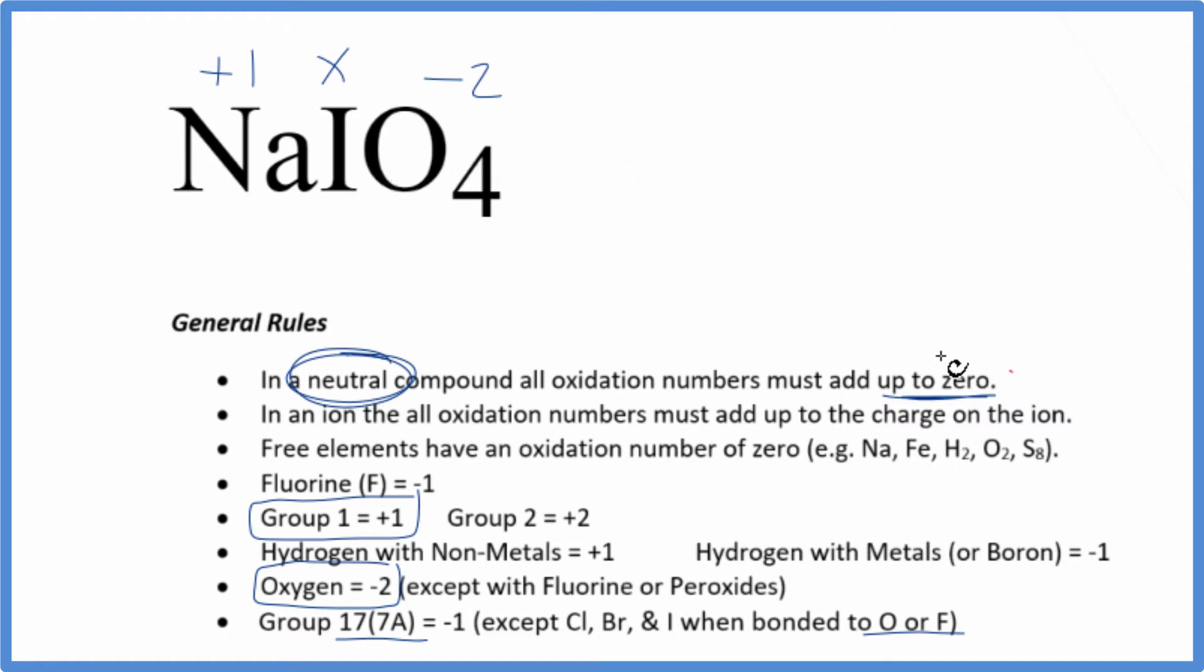All of this is going to equal zero. So we could just set an equation up. Sodium, that's the one, plus, we don't know the iodine, and then four times minus two is minus eight. That'll all equal zero. We just solve for X.